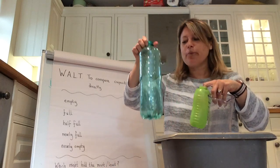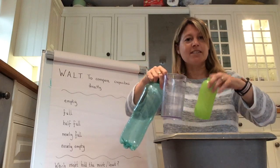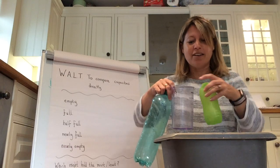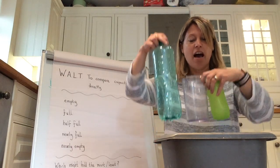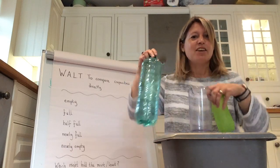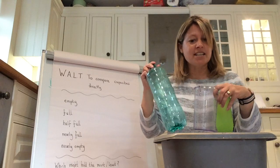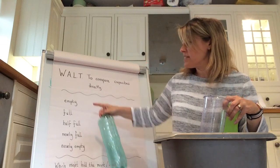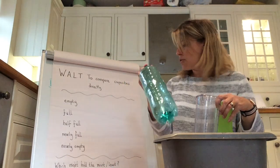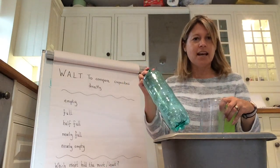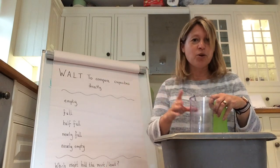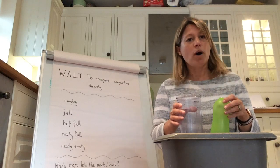This one in the middle — its capacity wasn't the greatest or the smallest. And this green bottle held the most water, so it has the greatest capacity. This bottle had the smallest capacity — the least amount of water it could hold. Out of my three containers, I'd put them in this order: the green bottle for the most, and the little one for the least. I want you to have a go with three containers using these words: empty, full, half full, nearly full, nearly empty — and see if you can work out which holds the most and which holds the least, then check to see if you're right.